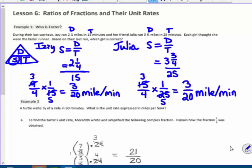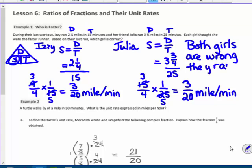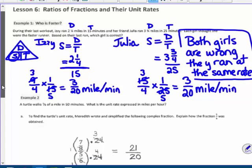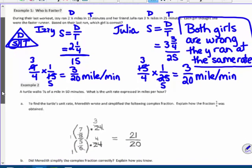Based on their last run, which girl is correct? Neither of them. Both girls are wrong. They ran at the same rate. Both girls are wrong. They were running at the exact same rate. You couldn't tell, though, with that 2¼ and 15, and 3¾ and 25 minutes.